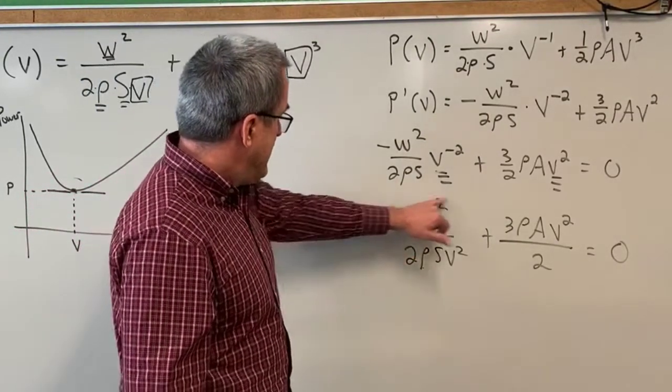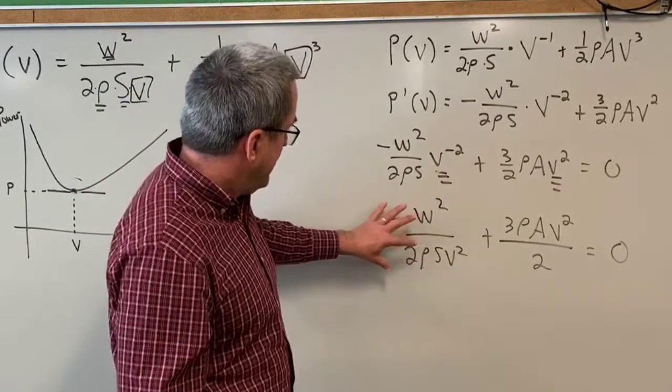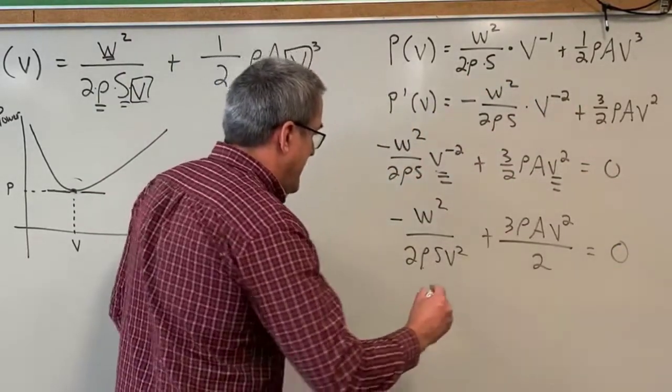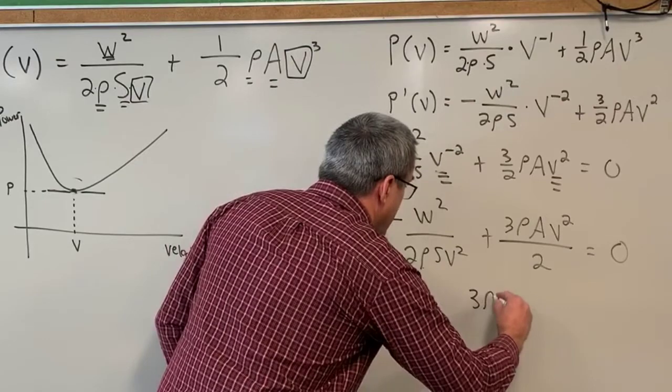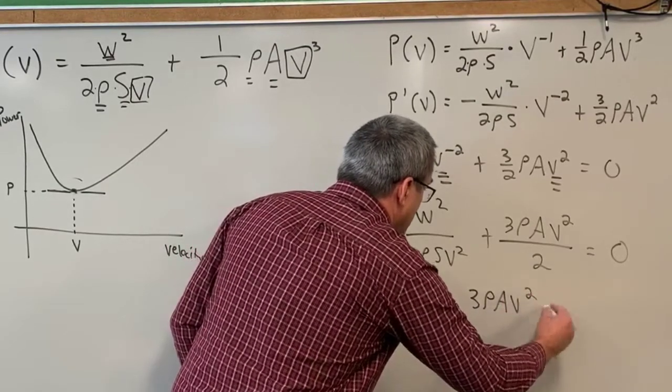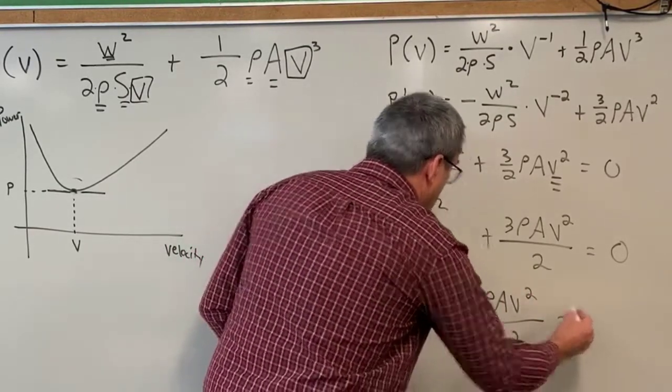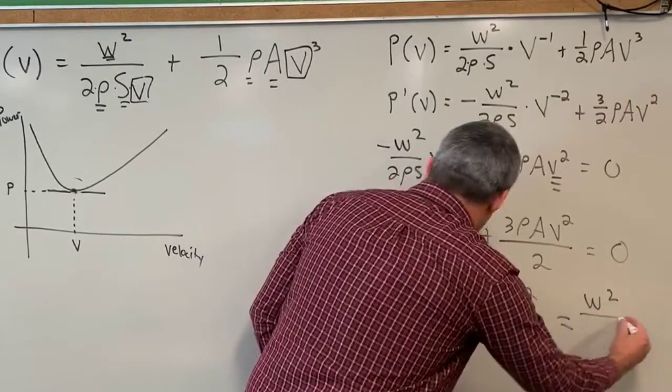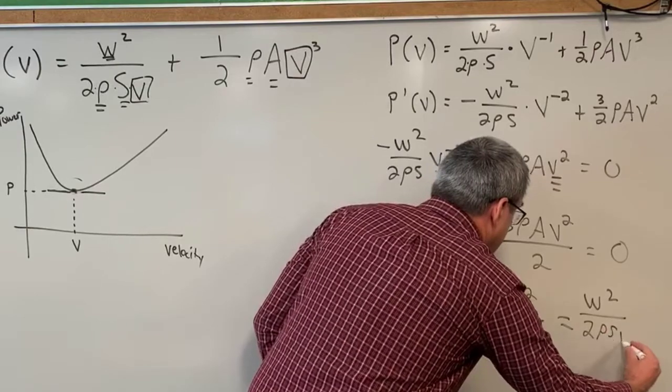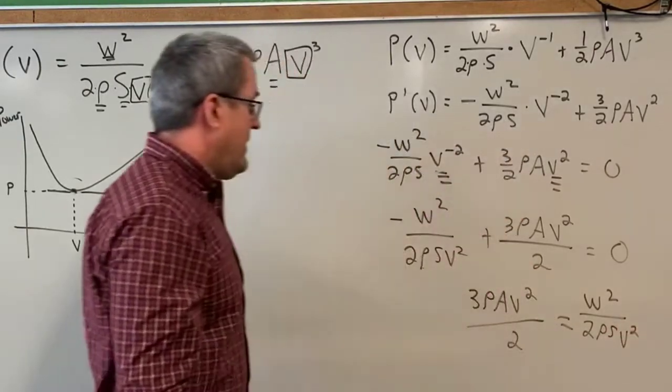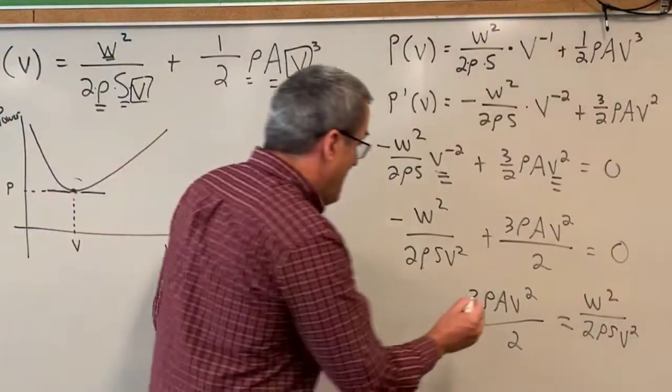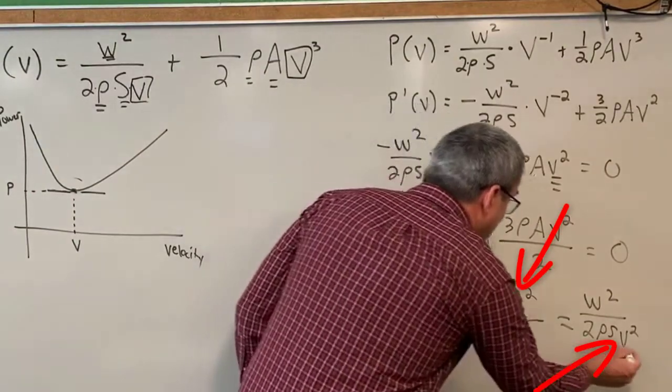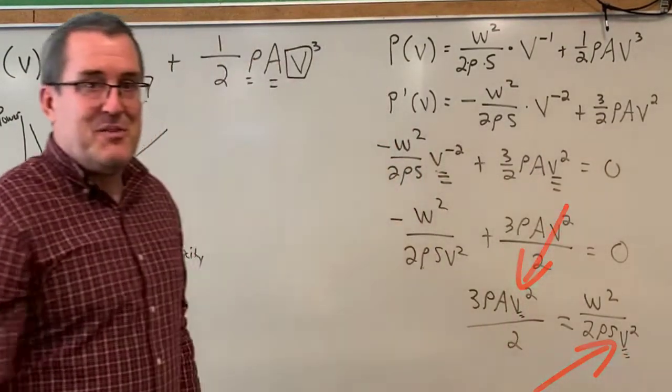My next move is going to be, since this first term is negative, let's add that term to the other side. So we'll have 3 rho A V squared over 2 equals, add this term to the other side, W squared over 2 rho S V squared. And now just keep in mind, what we're doing is we're going to solve for V. That's the goal of this project.